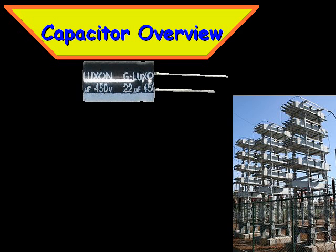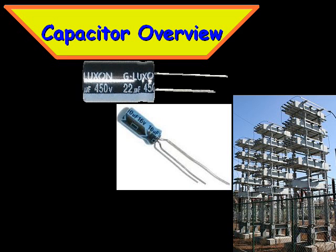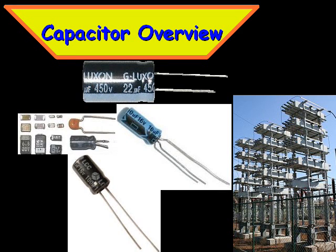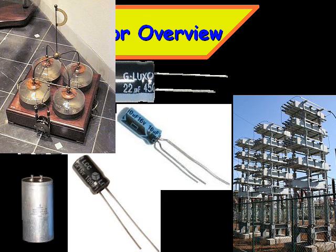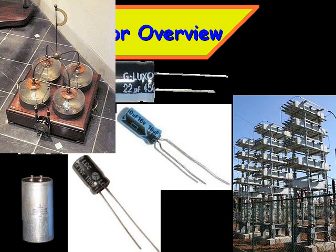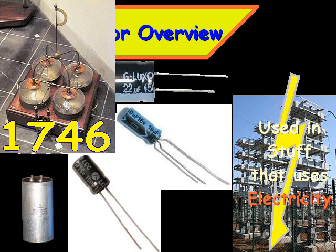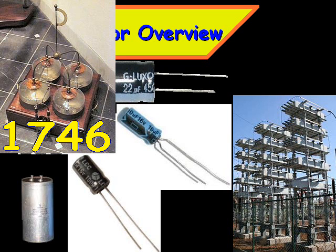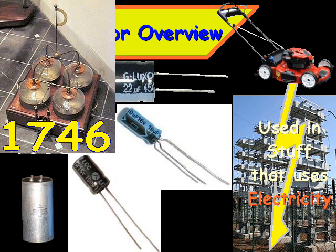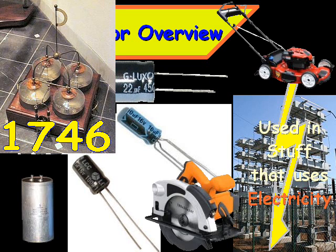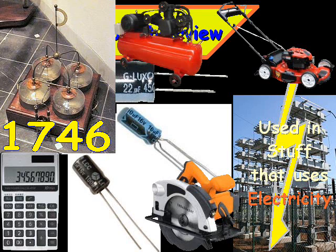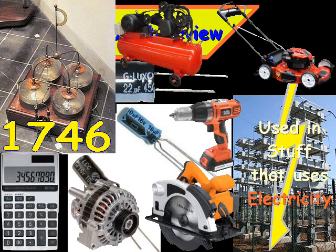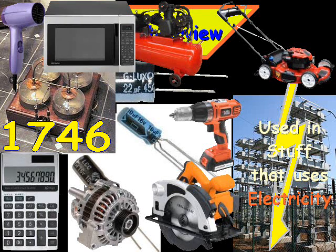Capacitors come in a wide variety of styles and vary in shapes and sizes. The first one was invented in 1746 and is better known as a Leyden jar. They're used in basically anything that uses electricity, and that encompasses a very wide range of stuff.